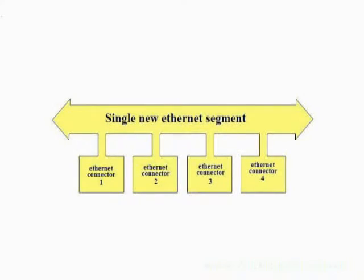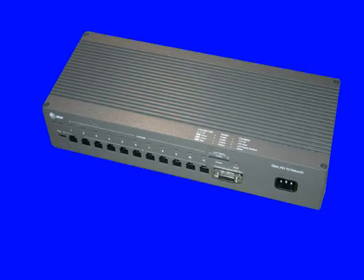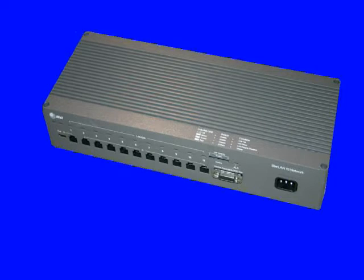StarLAN was still Ethernet at its heart, and it still used a collision domain, but the hub condensed the collision segment down to just a few inches within a small box. In spite of its innovative architecture, StarLAN just couldn't deliver speeds faster than one million bits per second because of the cheap, old cables strung throughout the telephone system on which it was based. StarLAN was a commercial failure — commercially, at least, they never quite met industry expectations.